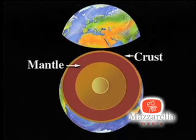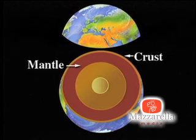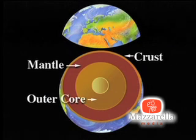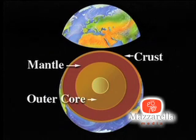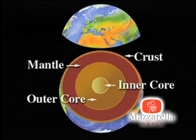Rocks found in the mantle are pressed tightly together, and some are partly melted. The layer below the mantle is called the outer core. The outer core is liquid rock. And below the outer core is the inner core. The inner core is solid.